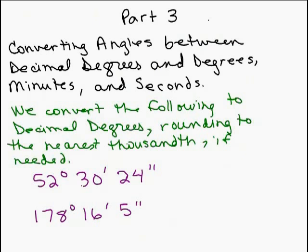This is part three of how to convert angles between decimal degrees and degrees, minutes, and seconds. In this video, we're going to convert the following angles given in degrees, minutes, and seconds to decimal degrees.